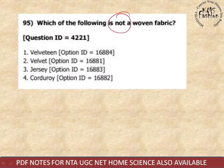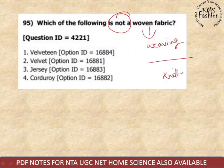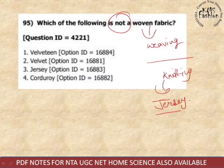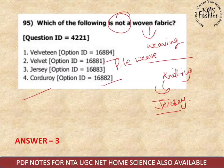Next: which of the following is not a woven fabric? Woven fabrics are made through weaving. Other than weaving, we have knitting. Jersey is a knitted fabric — we already know velvet is made with pile weave. So the correct answer is jersey.